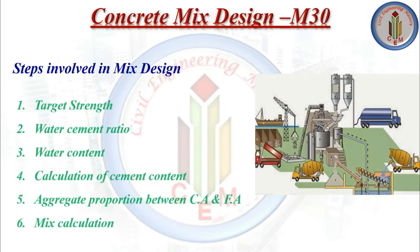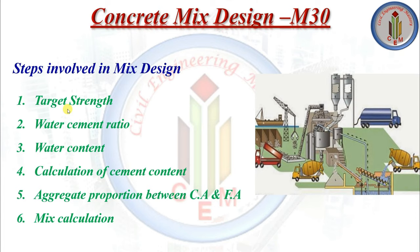Now let's see what steps are involved in mix design. First is target strength, then water-cement ratio, water content, calculation of cement content, aggregate proportion between coarse aggregate and fine aggregate, and finally mix calculation. These are the six steps involved in concrete mix design. It will be very easy if you follow the codes properly.